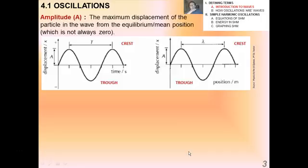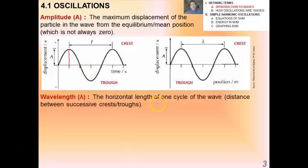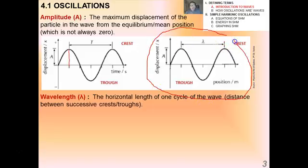Let me reiterate a few definitions for waves. The amplitude of a wave is the maximum displacement of the particle from the equilibrium or mean position, denoted A. Don't make the common mistake that it's from crest to trough — it's from crest to the middle, or trough to the middle. The wavelength is the horizontal length of one cycle of the wave. It's important to distinguish between a displacement-time and a displacement-position graph. Wavelength only makes sense on a displacement-position graph, because it has dimensions of length, in SI units of meters.